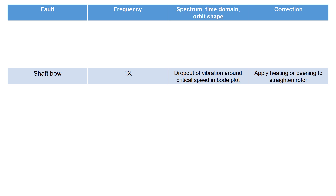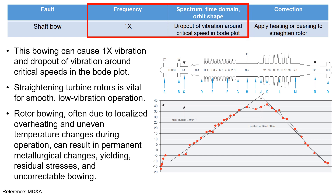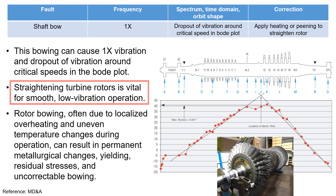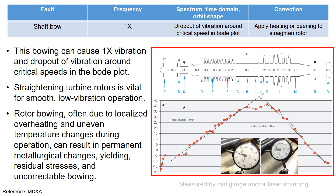Let's look into the shaft bow. This bowing can cause 1x vibration and dropout of vibration around critical speeds in the Bode plot. As you could imagine, straightening the turbine rotors is vital for smooth and low vibration operation. The figure on the right shows the rotor runout measurements showing shaft bow, measured by dial gauge.